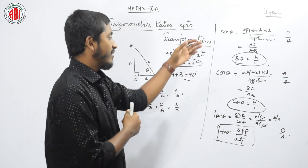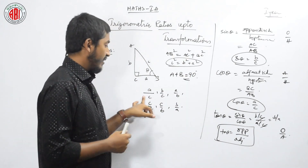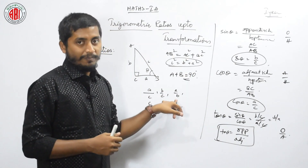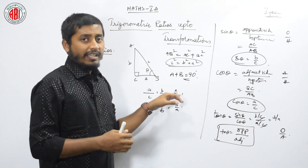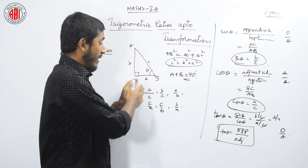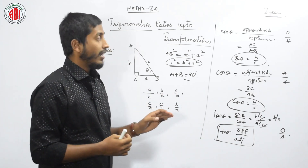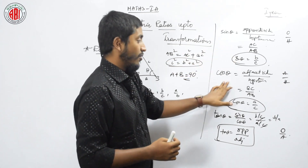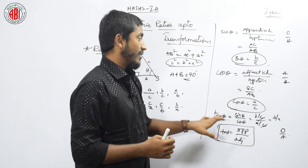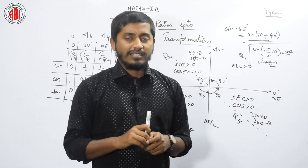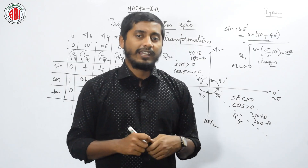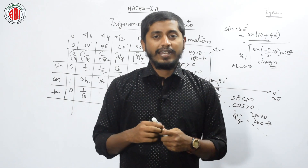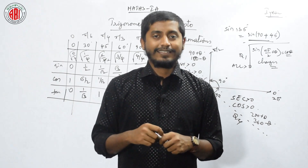From these three things, we have discussed A/C, B/C, and A/B. The next will be the reciprocals of these things — the reciprocal of sin, reciprocal of cos, and reciprocal of tan. This is for today. Let us continue with more problems in the next session. Thank you.